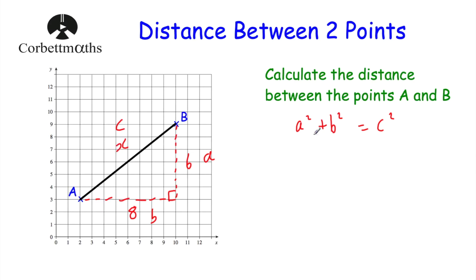Now let's replace a, b, and c in Pythagoras's theorem with our values. So instead of a squared, we're going to write 6 squared, and then plus, and instead of b squared, we're going to write 8 squared, and then that equals c squared — and c is X, so that's X squared.